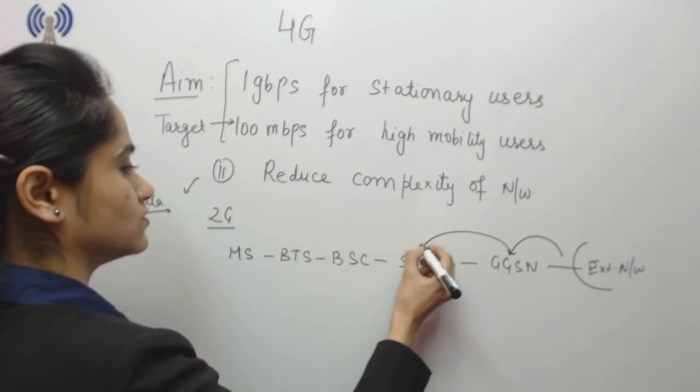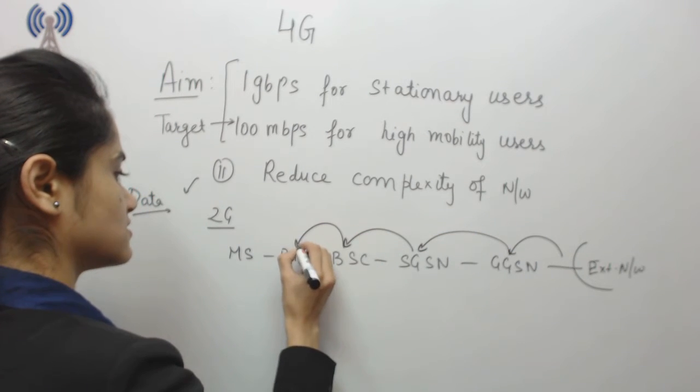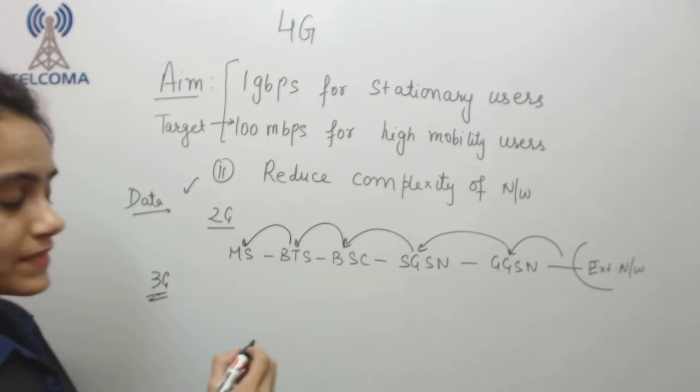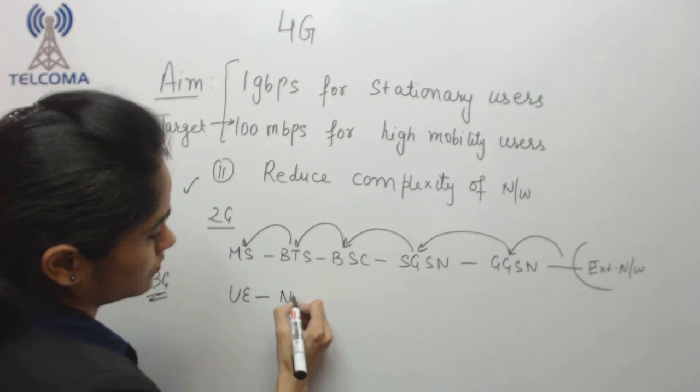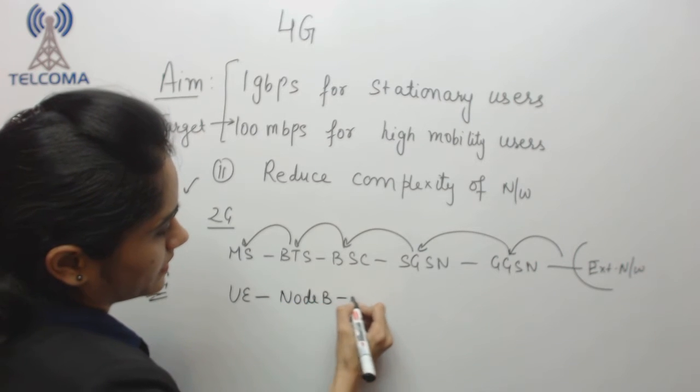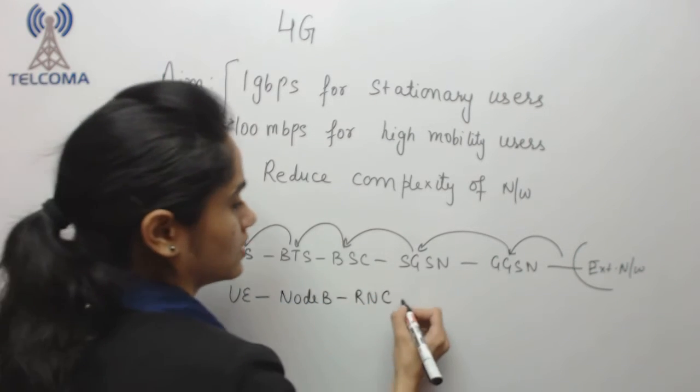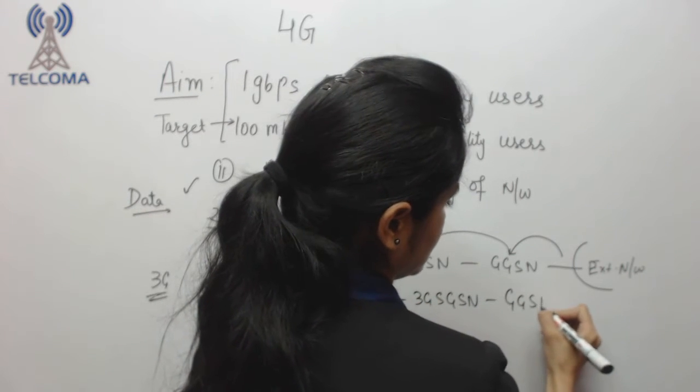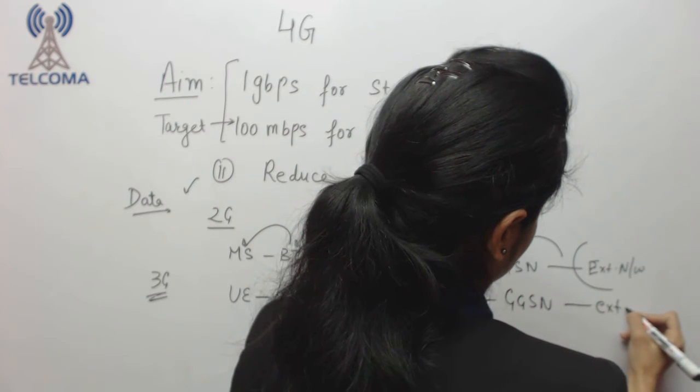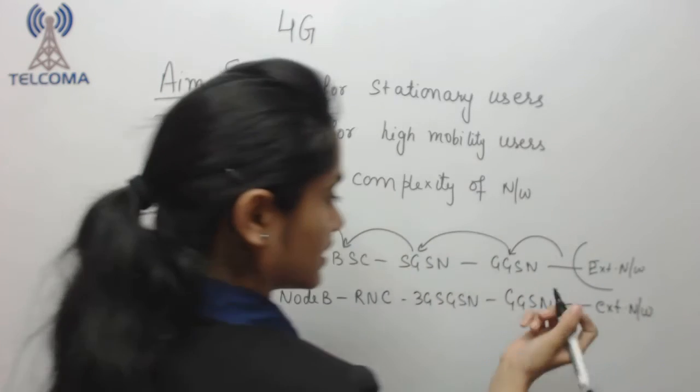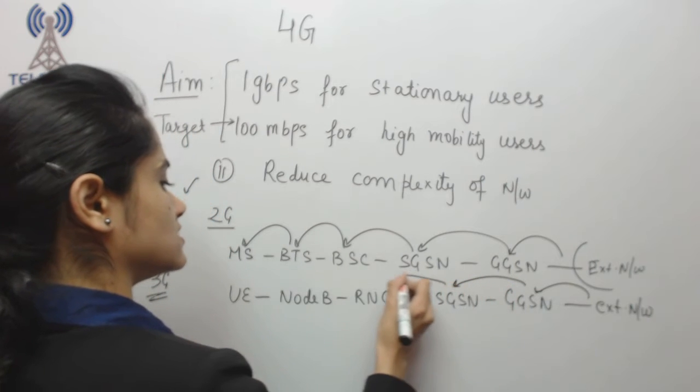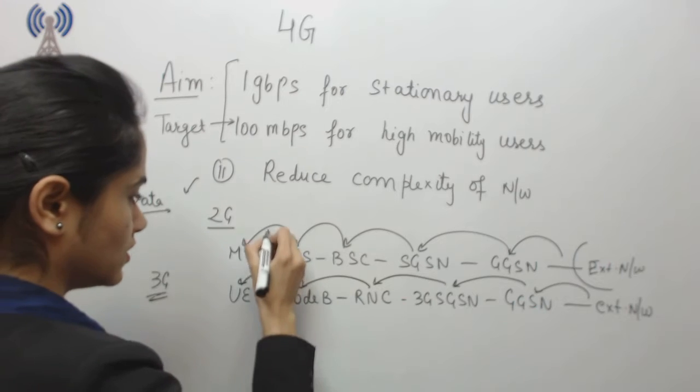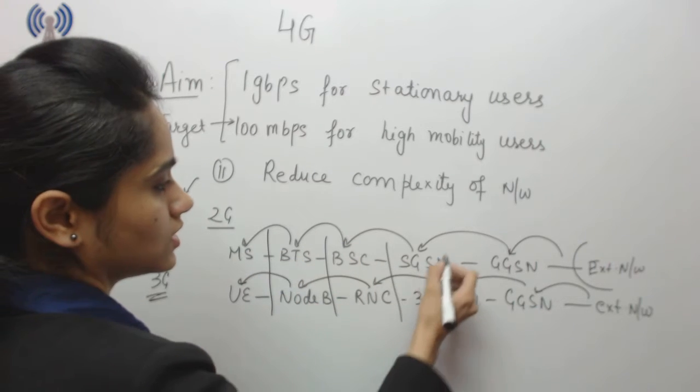Now I will compare this with 3G. 3G has user equipment, this is attached to node B, then we have RNC radio network controller, then we have 3G SGSN, we have GGSN, and again we have external network. Again, talk about the number of the nodes: GGSN, SGSN, RNC, node B, and user equipment. If we talk about the total number of nodes, so total number of nodes are same.